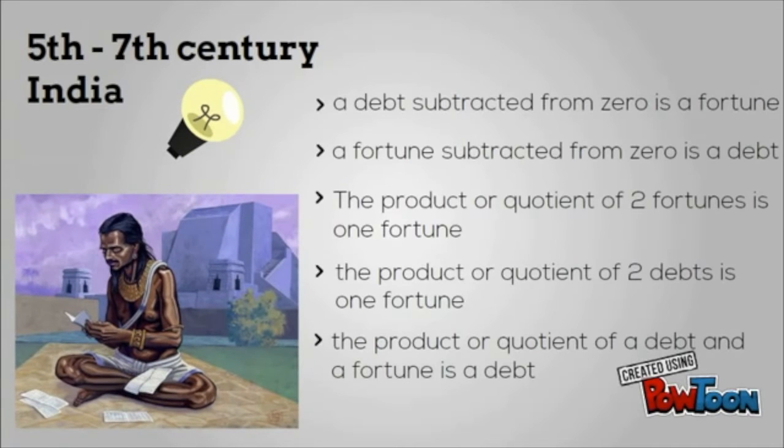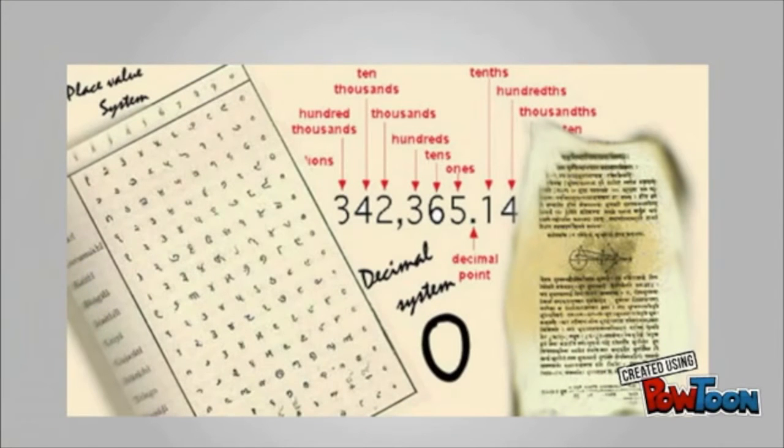Brahmagupta established the first set of rules dealing with negative numbers using fortune and debt. These are rules we commonly accept today. India was arguably the first civilization to develop a coherent number system that included a defined decimal point, decimal places and negative numbers.